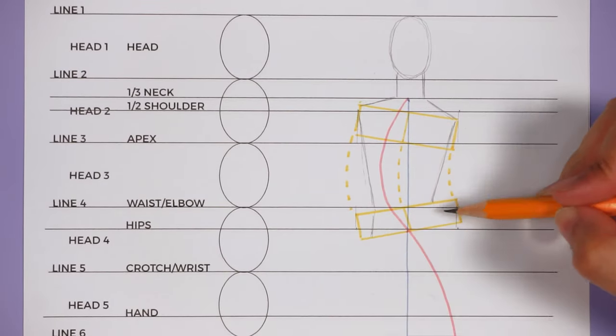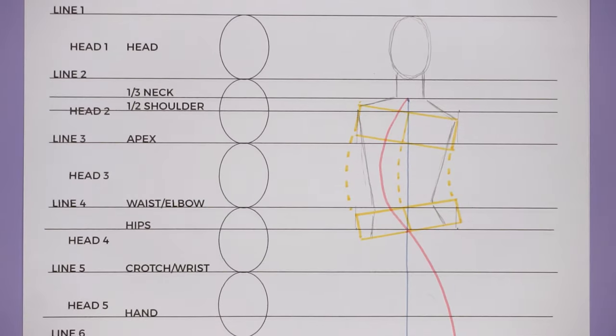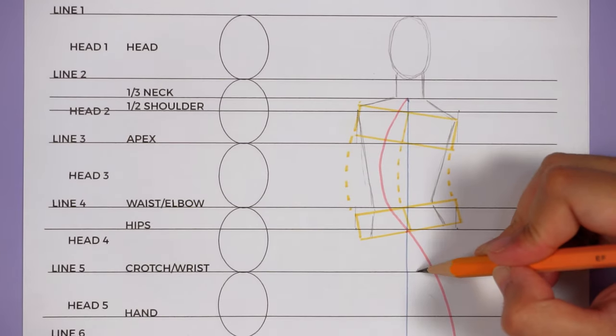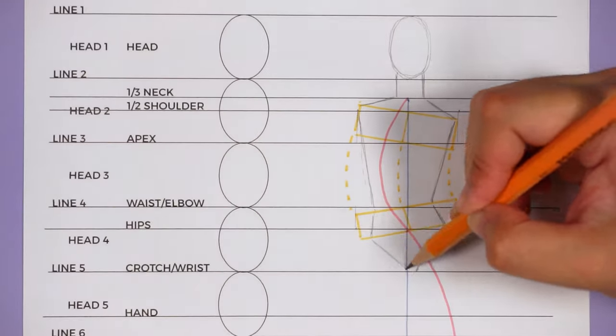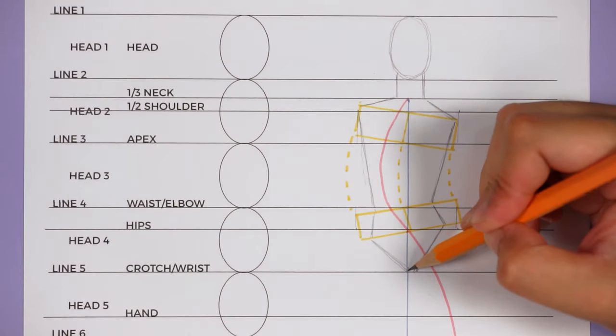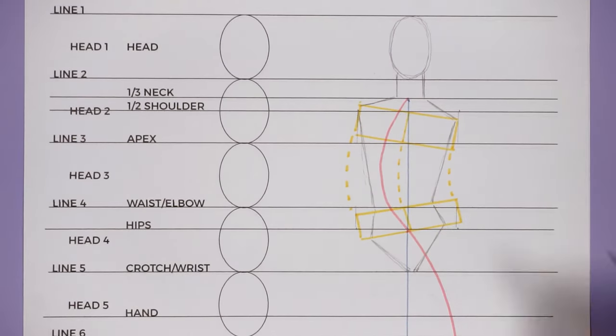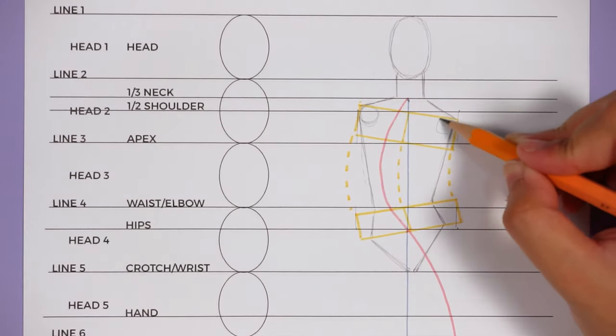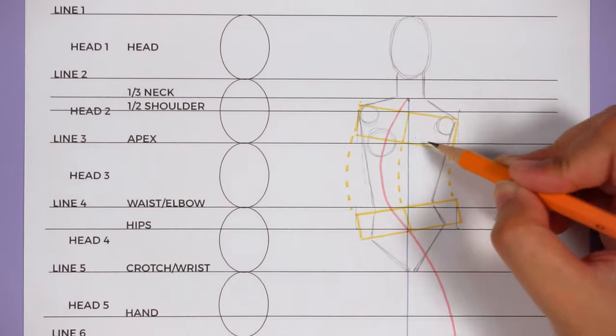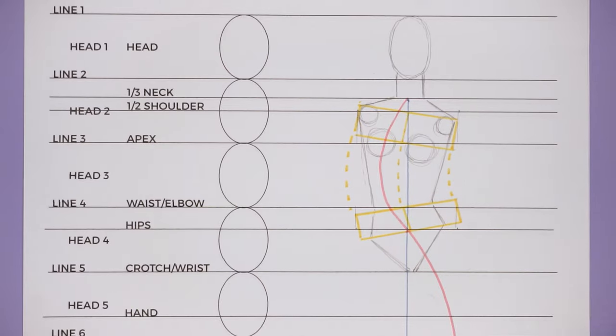So I like to start by drawing the body parts as either straight lines or circles for joints. That just helps me map out the body. Starting with the upper half of the body, I make sure to follow the action lines but also still maintaining the general proportions of the body.